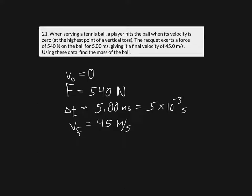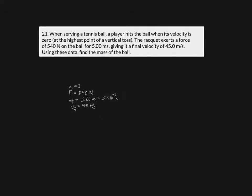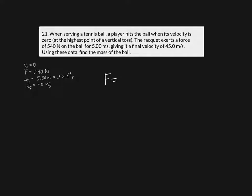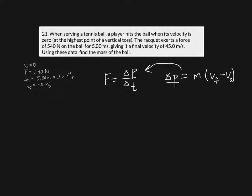Now, how can we use all these numbers? Let's write down some equations. We know that force equals the change in momentum (Δp) divided by change in time. We also know that Δp equals the impulse, which is mass times the change in velocity — that's v_final minus v_initial. This is the definition of impulse, or change in p. Substituting, force equals mass times (v_final minus v_initial) divided by Δt.